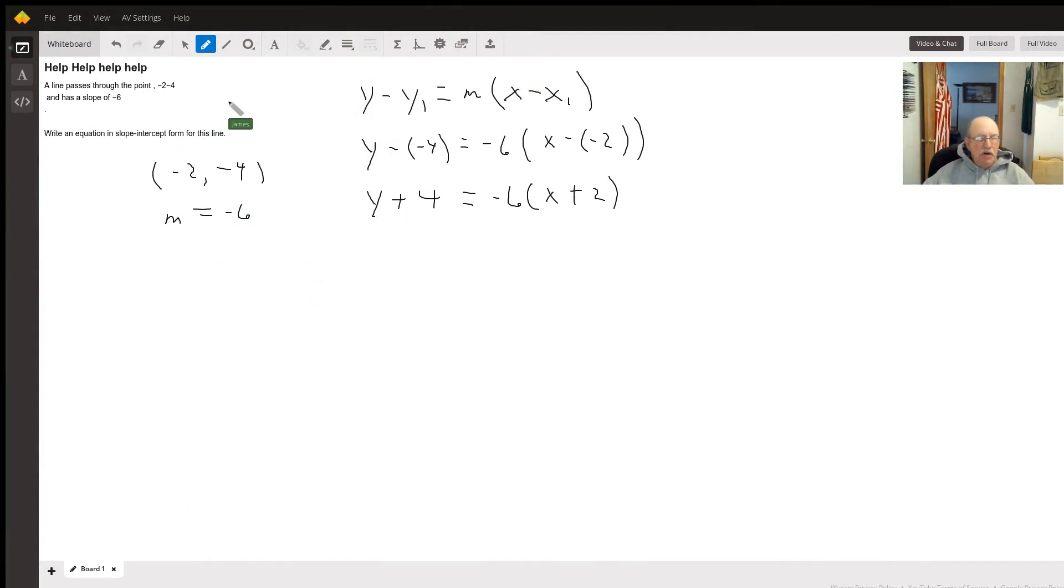Hello, so we know our line goes through the point (-2, -4) and has a slope of -6. We're going to use the point-slope form to get the slope-intercept form.